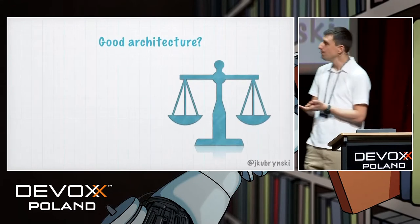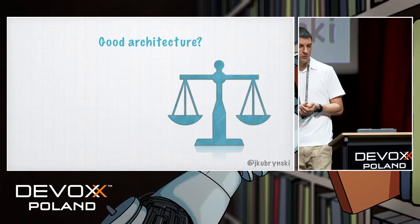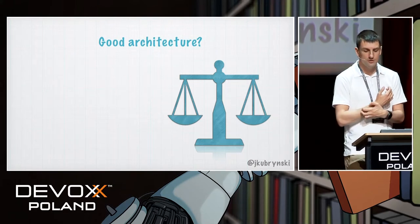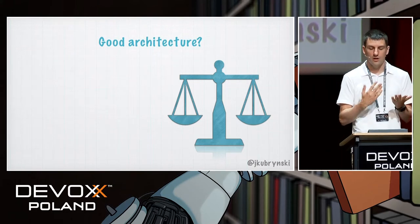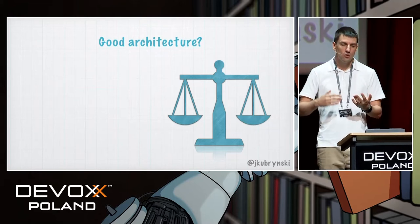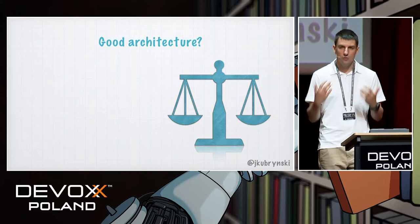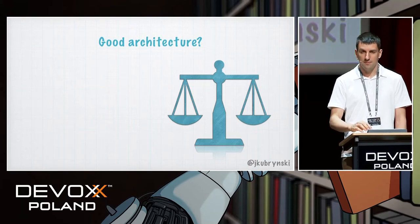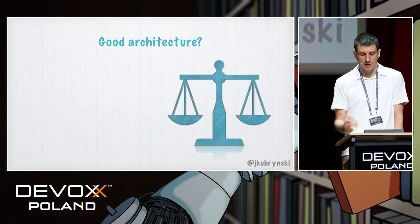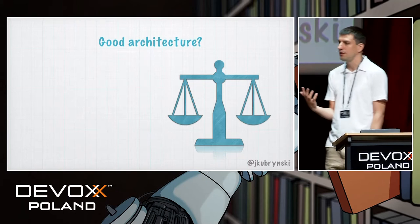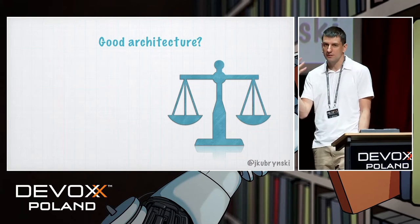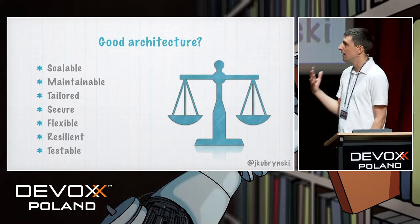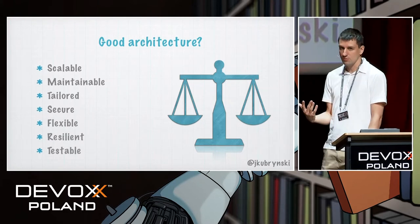At the start of architecture trainings, I always ask: what do you mean by good architecture? Because everyone wants the best architecture in their project, but what does that mean? As we're in IT, everything is context-dependent. Depending on the context, there are different answers to this question.